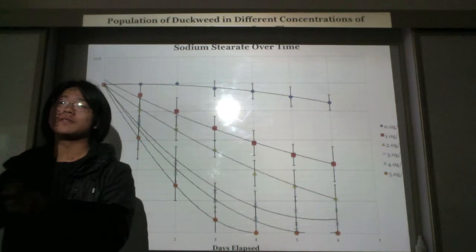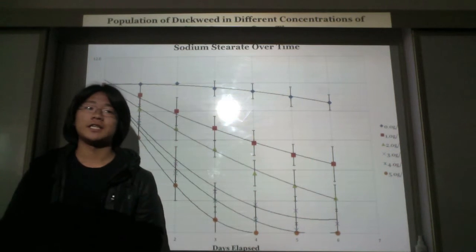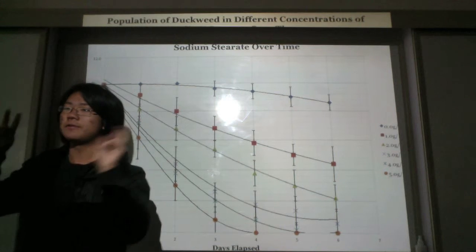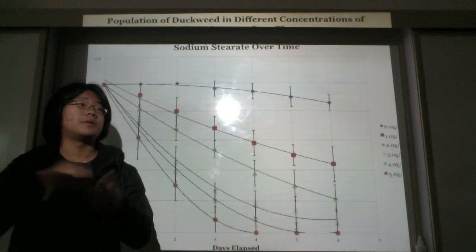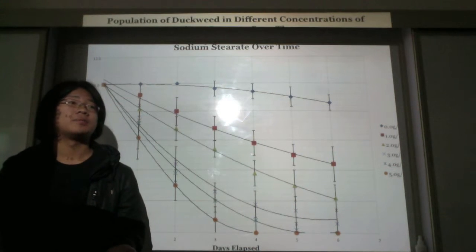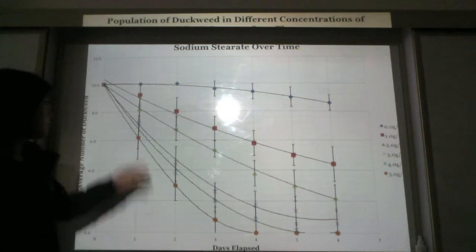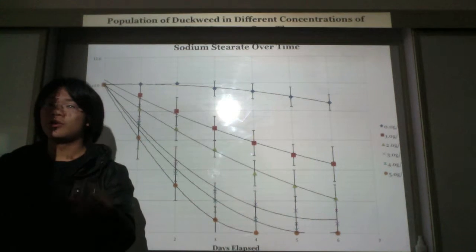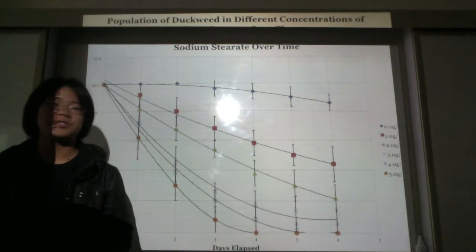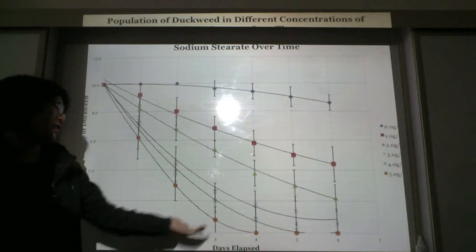So duckweed remain on the surface of the liquid because of the property of surface tension, meaning they can actually just float on the surface. So the stomata are open, they can still transpire. So for these three, the actual surface of the duckweed were underneath the water, they were submerged, so it's pretty obvious to see that they would just die off.